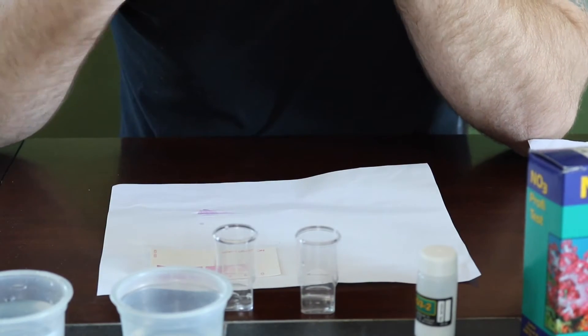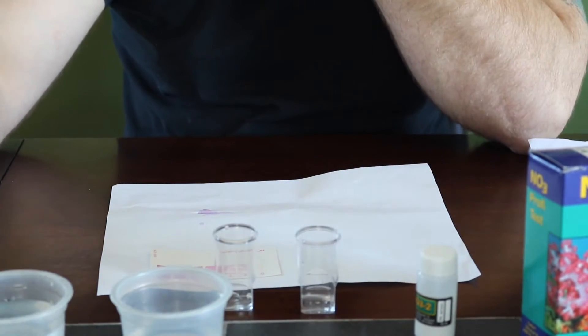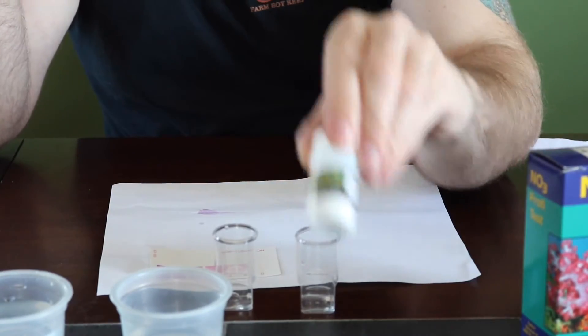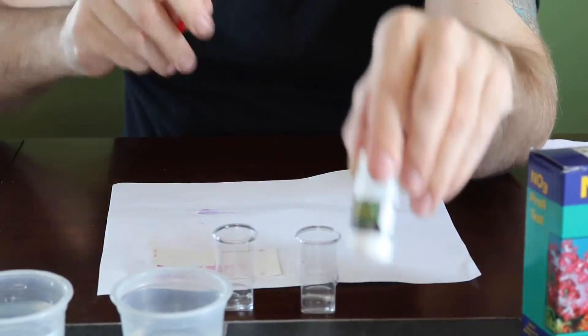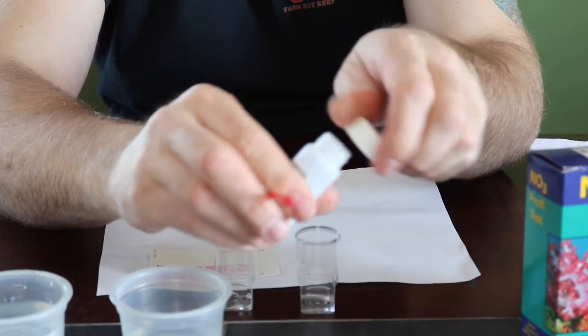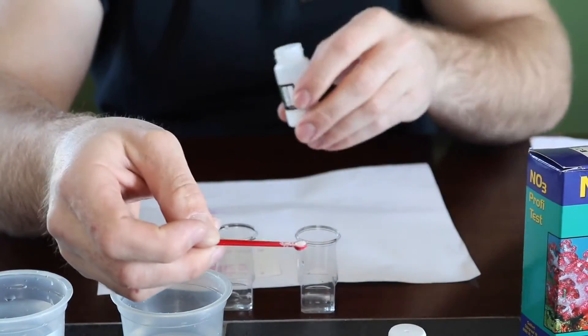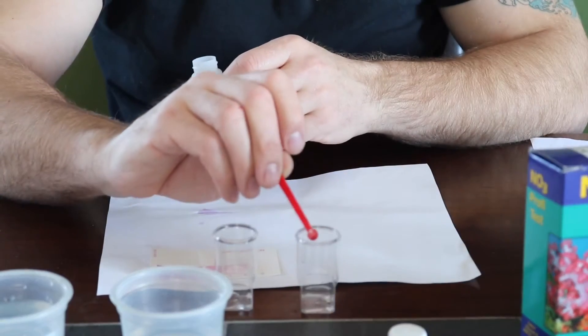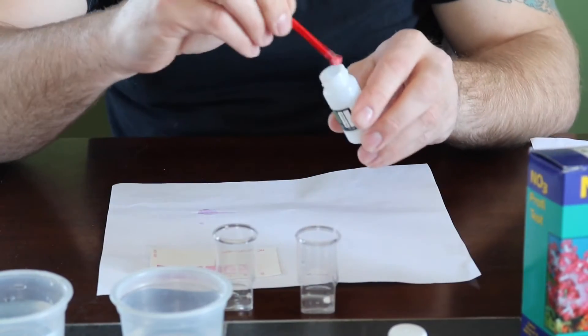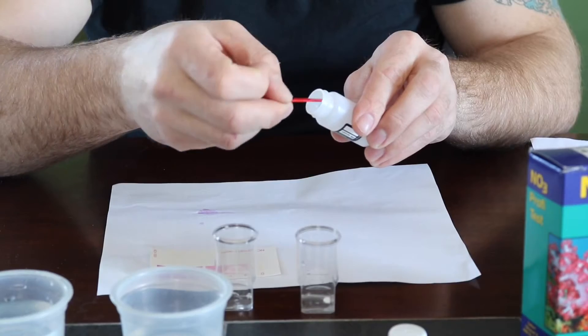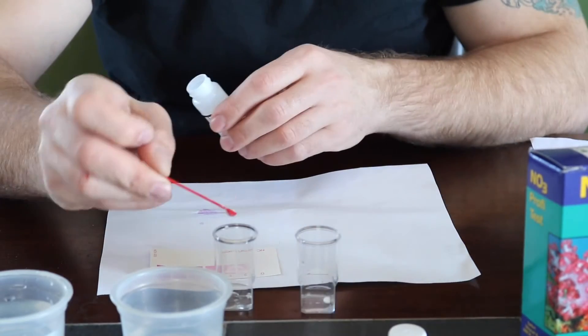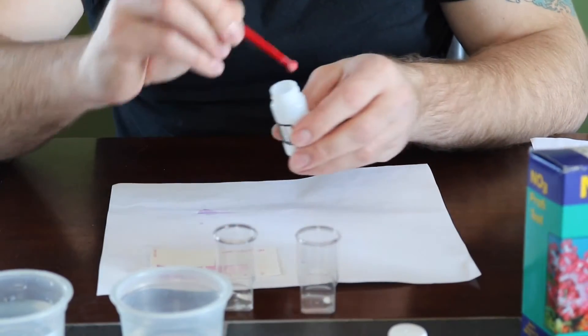So what we need to do now, we don't shake it right now. What we're going to do is we have to take the NO3-2 powder and our little spoon and we need to put one each in each test vial. So just make sure it's level. So you guys see how that's nice and level. So we add that to the first one. Don't shake it yet. And let's do the other sample. Make sure it's level. Just like that.